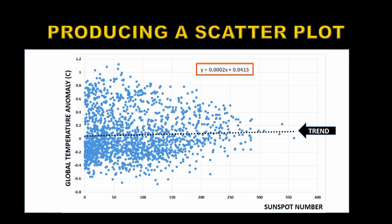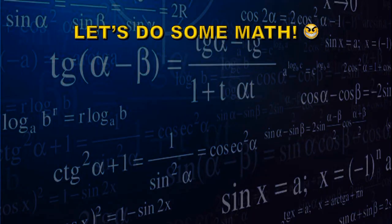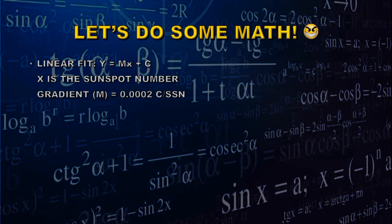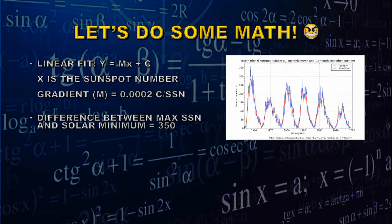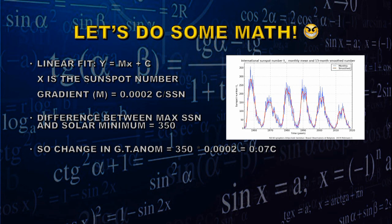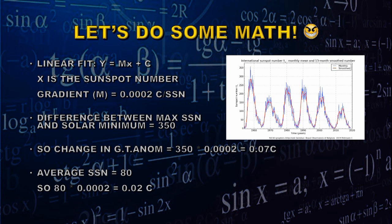Let's see what impact that really has for the range of sunspot numbers available to us. The equation for a linear fit is y = mx + c, where x is the sunspot number and m is the gradient: 0.0002°C per sunspot number. The maximum difference between a solar maximum and solar minimum sunspot number is 350, so multiplying by 0.0002 gives 0.07°C — the maximum change over a full solar cycle. However, the average sunspot number over the last few decades has been 80, so the realistic difference is 80 × 0.0002 = 0.02°C.